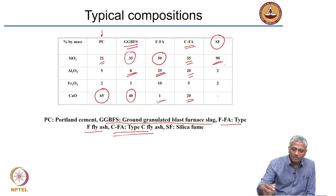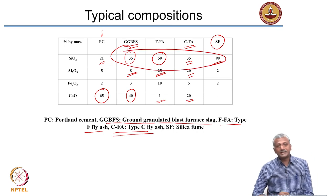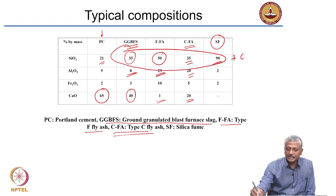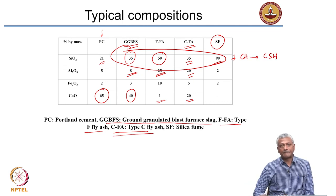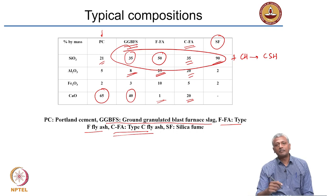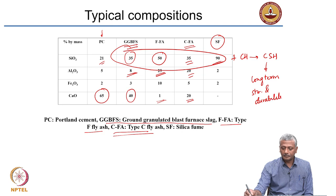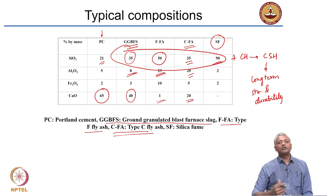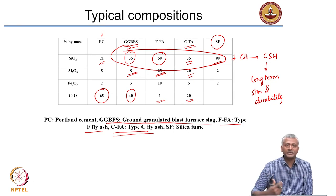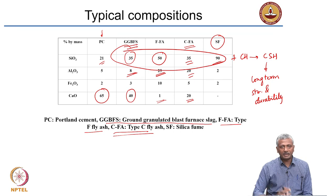The common feature across all these supplementary cementing materials is the silica content. This silica reacts with calcium hydroxide generated during cement hydration to produce additional CSH. When you use supplementary cementing materials, you end up forming additional CSH, which is responsible for long-term strength and durability. Durability is the ability of concrete to withstand the forces of the environment around it — not loading but the environmental effects.